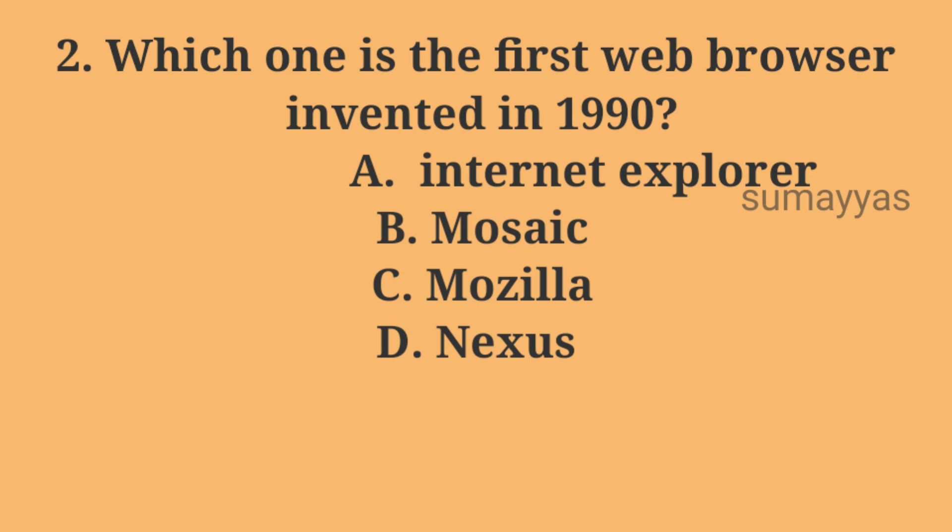Question number two: which one is the first web browser, invented in 1990? Option A: Internet Explorer. Option B: Mosaic. Option C: Mozilla. Option D: Nexus. The answer is Option D: Nexus.